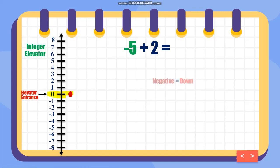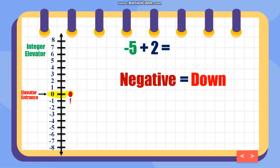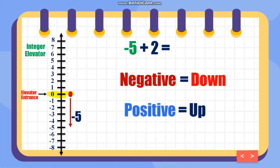Negative 5 means going down. From 0, going down to negative 5. Then plus 2 — 2 is positive, so positive means going up. Starting from negative 5, I need to go up 2 times, so I end up at negative 3. That's why negative 5 plus 2 is negative 3.